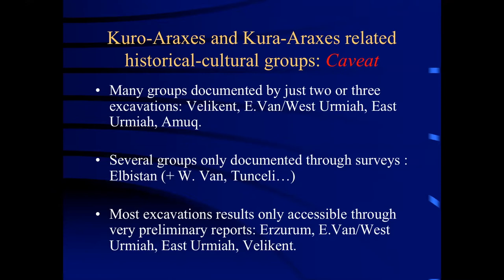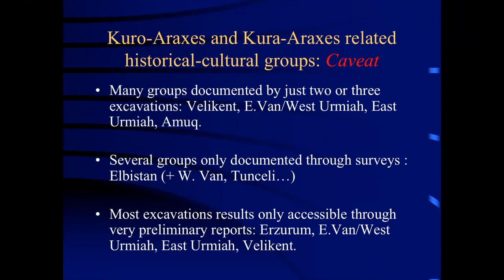Moreover, it should be noted that the data with which this map has been created rest on data of very uneven quality. Many of the units I have delineated are illustrated by just two or three excavations — this is the case of the Velikent unit, the East Van–West Urmia unit, or the Eastern Urmia and the Amuk units. Several isolated groups are only documented through surveys, such as the Elbistan group, but of course I could have also added the Western Van group or the Tunceli group. And most of the excavations whose data I have used are only published through very preliminary reports — this is the case in the Erzurum region, the Eastern Van–West Urmia region, the Eastern Urmia region, and Velikent.